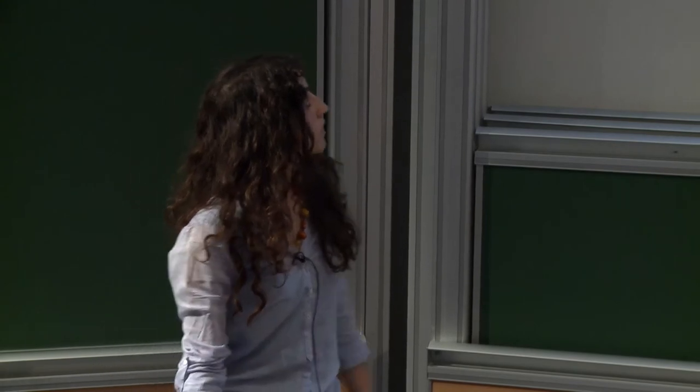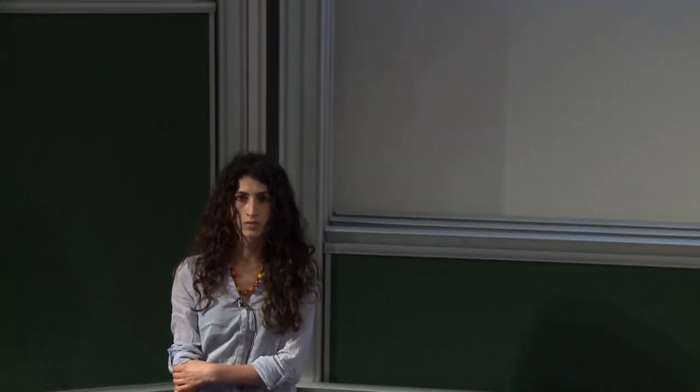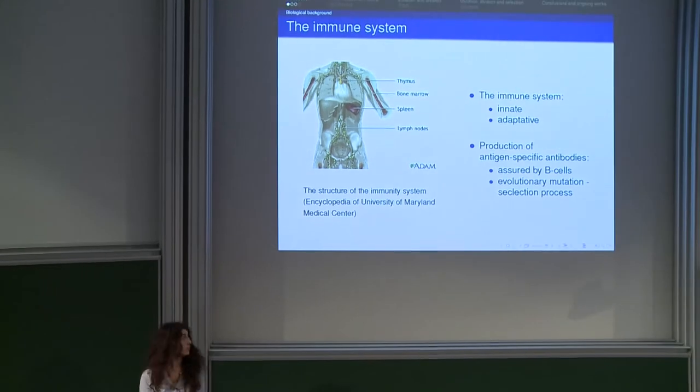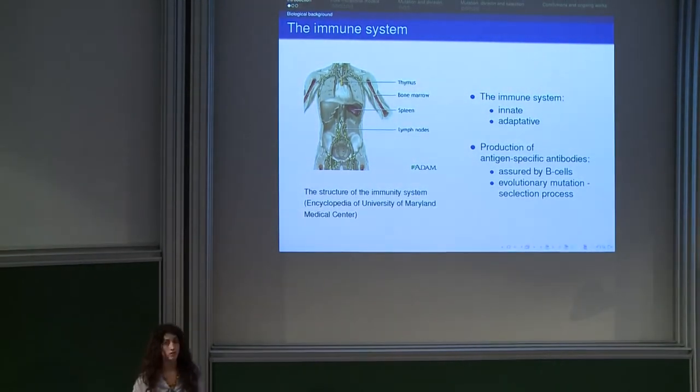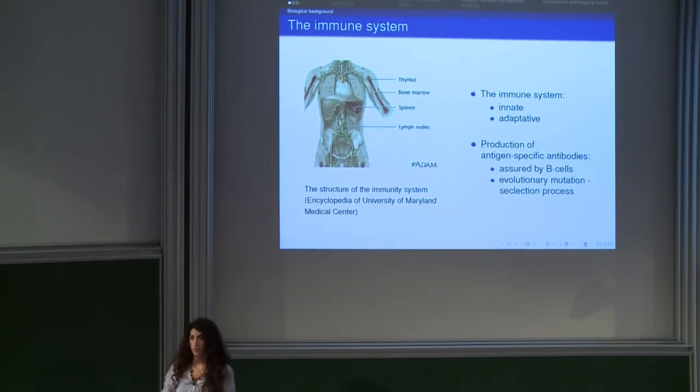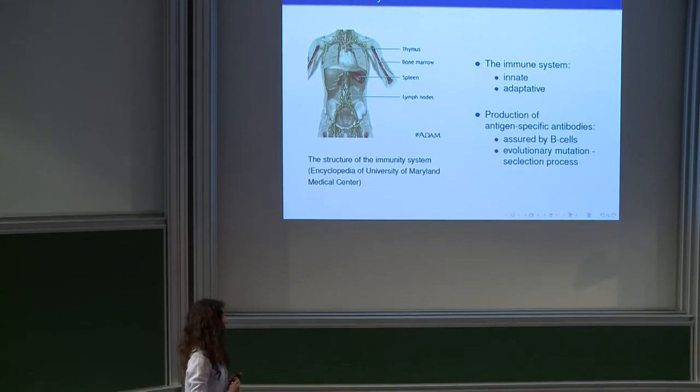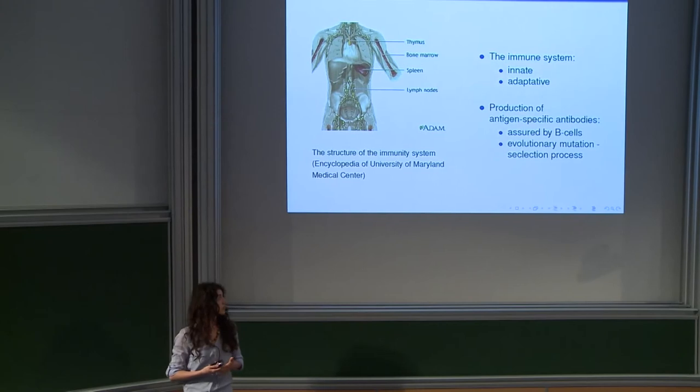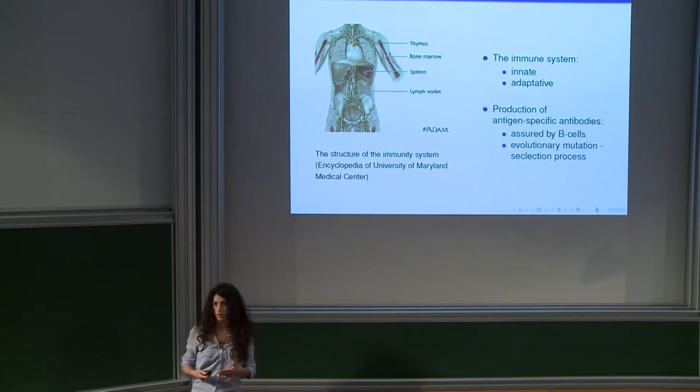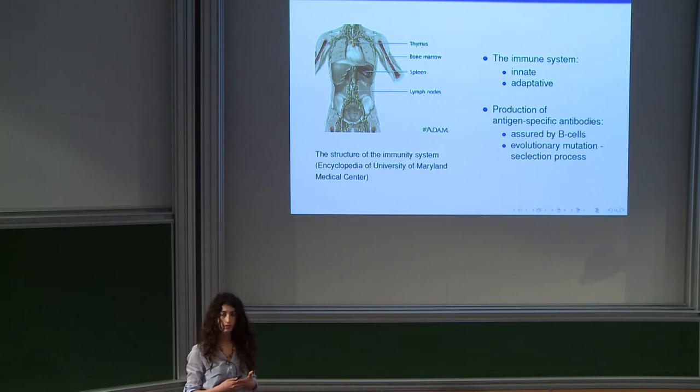So the biological background is the immune system. The immune system can be divided into innate immune system and adaptive immune system. The innate immune system defenses react very quickly but they are non-specific, meaning that they respond to pathogens in a generic way. On the other hand, the adaptive immune system takes a longer time to react but it can adapt against almost all pathogens that could penetrate our organism and inflict diseases.